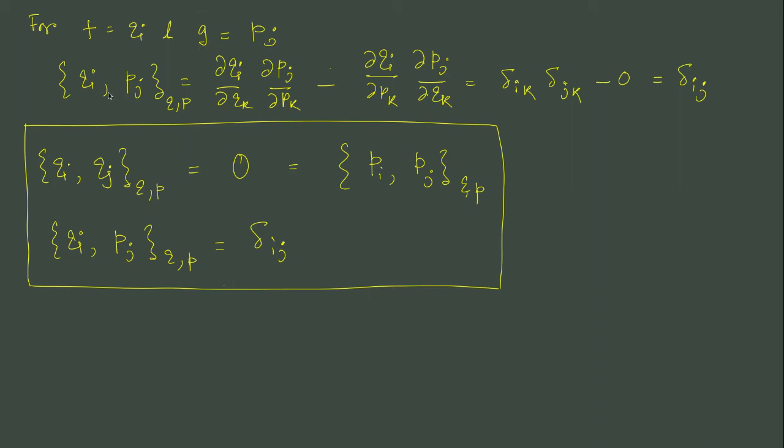We are looking at Poisson bracket between qi and pj. We use this definition and the first term ∂qi/∂qk gives us Kronecker delta ik and the second term ∂pj/∂pk gives us Kronecker delta jk. The sum over k is there. The other partial derivatives like partial derivative of q with respect to p or partial derivative of p with respect to q vanishes. This delta ik times delta jk is the two Kronecker delta where we have the sum over k that simply gives us delta ij. You see qi pj gives you 1 when i equals j, otherwise it is 0.